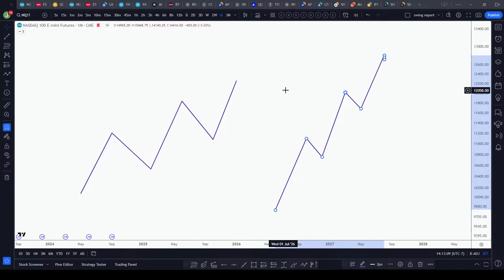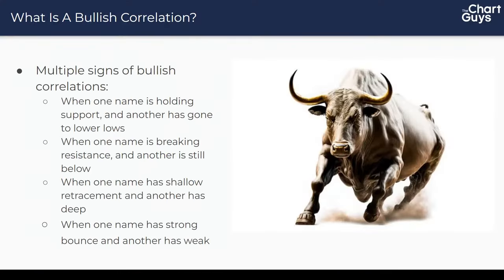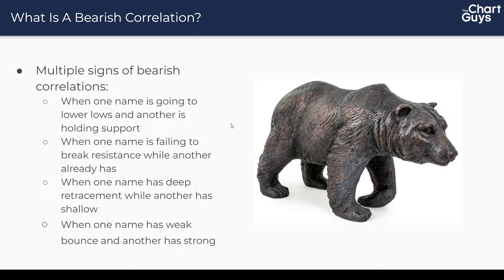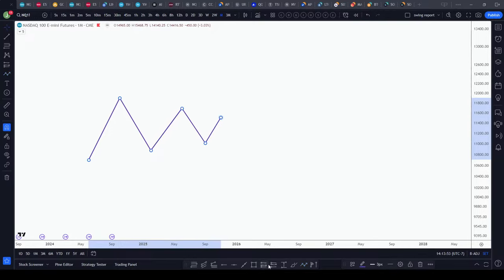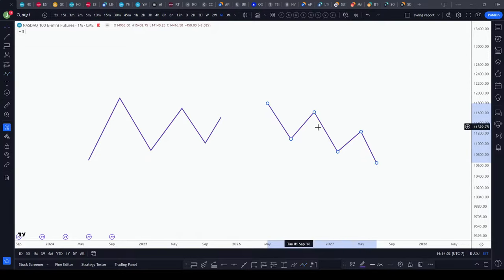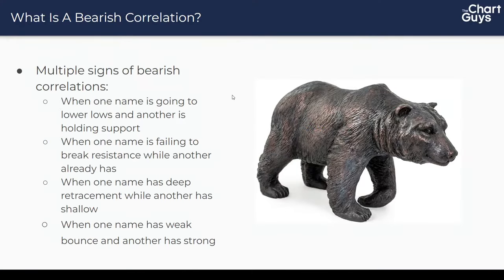A bearish correlation is ultimately the opposite. Signs: one name going to lower lows while the other still holds support; one name failing to break resistance while another already has; one name with deep retracement while another has shallow; one name with a weak bounce while another has a strong bounce. To visualize the opposite side — if the S&P 500 is in an equilibrium and QQQ is in a downtrend, our peaks and troughs are still at the same time, but QQQ going to lower lows is a bearish correlation.